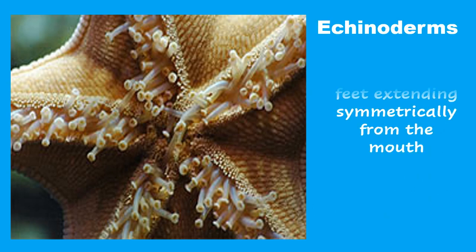What do you notice at the bottom of this starfish? Enkinoderms have paired rows of tube feet extending symmetrically from the mouth. These tube feet are used to help the animal move, feed, and for respiration.